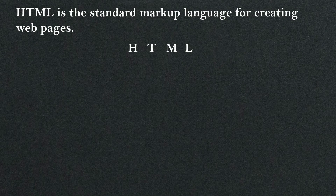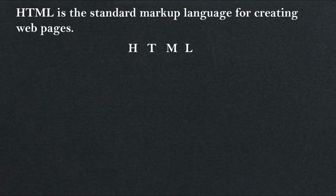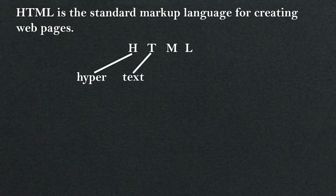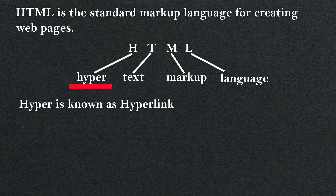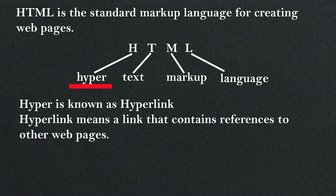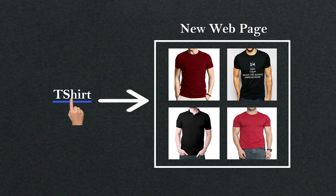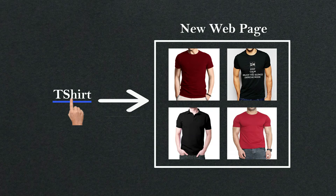Let me tell you very closely what exactly HTML is. HTML stands for HyperText Markup Language. 'Hyper' refers to hyperlink. A hyperlink is a link that contains references to other web pages — a link which redirects from one page to another page. For example, whenever you click on any particular link, whether it is a text link, image, or multimedia link, a new page opens. That is the process of hyperlink.